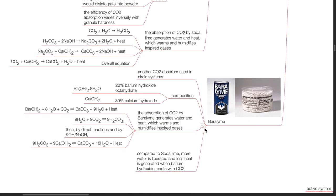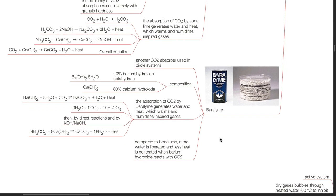Barium lime is another CO2 absorber used in circle systems. Its composition is 20% barium hydroxide octahydrate and 80% calcium hydroxide. The absorption of CO2 by barium lime generates water and heat, which warms and humidifies gases. The formula: Ba(OH)2·8H2O + CO2 → BaCO3 + 9H2O + heat; 9H2O + 9CO2 → 9H2CO3, then by direct reactions and by KOH or NaOH: 9H2CO3 + 9Ca(OH)2 → CaCO3 + 18H2O + heat. Compared with soda lime, more water is liberated and less heat is generated when barium hydroxide reacts with CO2. For further details, kindly refer to the video on CO2 absorbers.